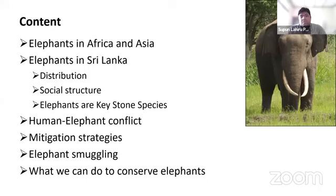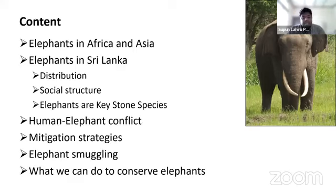I would like to divide my presentation into the following aspects: elephants in Africa and Asia, elephants in Sri Lanka, their distribution, social structure, elephants as keystone species, human-elephant conflict and mitigation strategies, elephant smuggling, and finally, what we can do to conserve elephants.